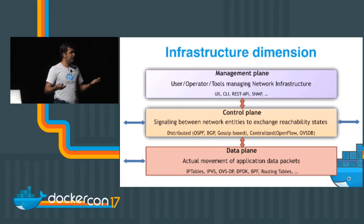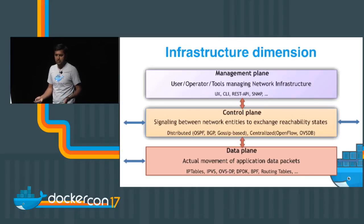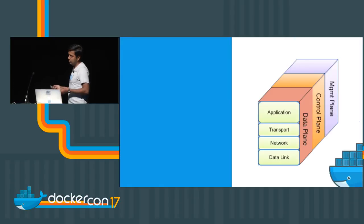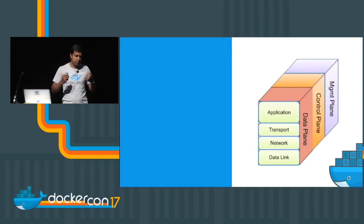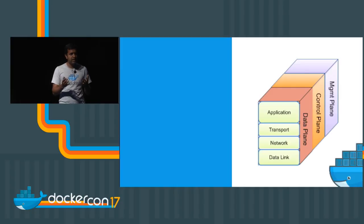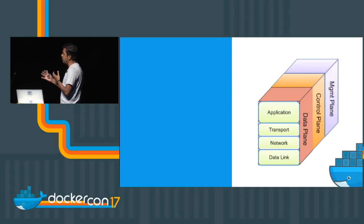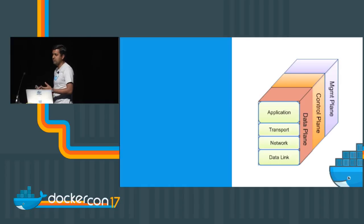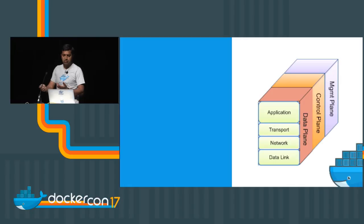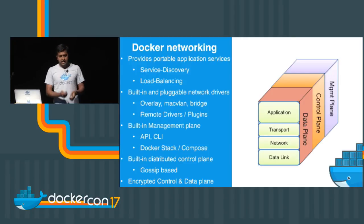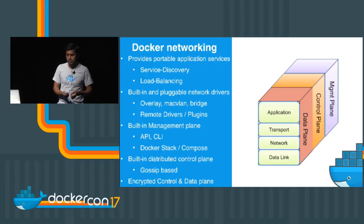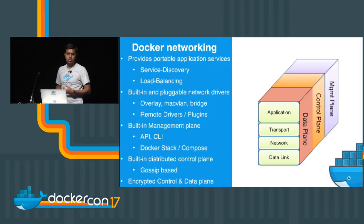We see that there's an infrastructure view of networking and an application view of networking. If we have these two different views and never reconcile them, we can never come up with an easy-to-use networking architecture. So at Docker, we see them as a multidimensional view and try to make it simpler by providing a three-dimensional view of networking, so infrastructure and applications can work seamlessly without conflict. Docker networking added a lot of features — we have application services like service discovery and load balancing that come out of the box.